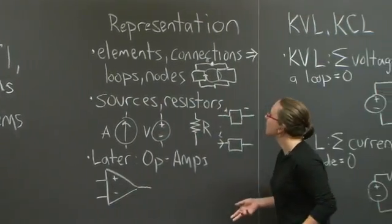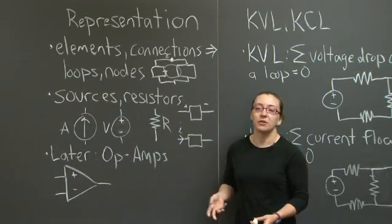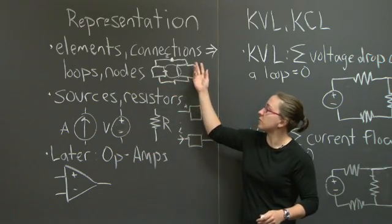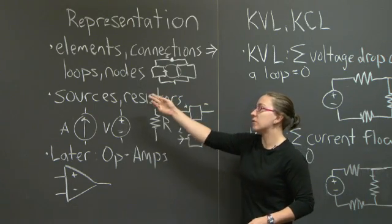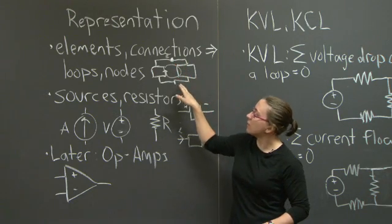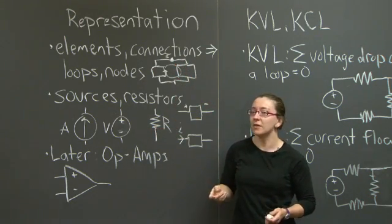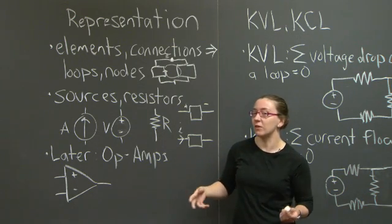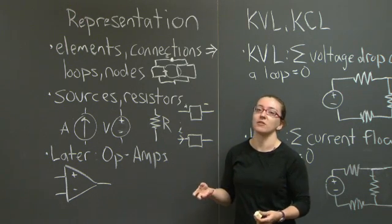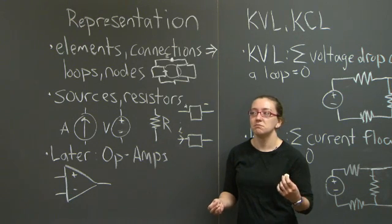First, let's talk about representation. In the general sense, when you come across a circuit diagram, you're going to see a bunch of elements and a bunch of connections between them — those things will form loops and nodes. If you don't specify the elements, a circuit diagram looks a lot like a block diagram, and in fact they are closely related, in part because block diagrams are used to model feedback systems, which are frequently implemented using circuits.